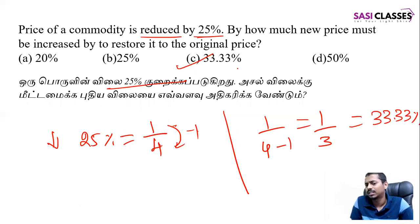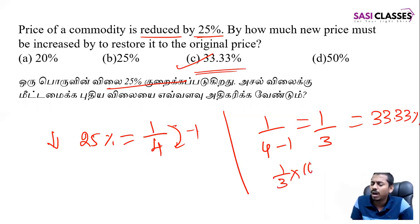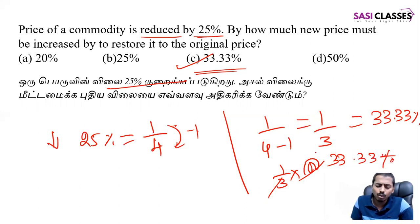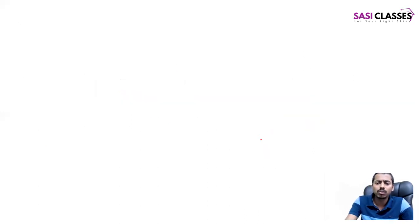So 33.33 percentage is the answer. Option C is the answer. Direct protocol: 1 by 3 into 100 equals 33.33 — and so on. Thank you.